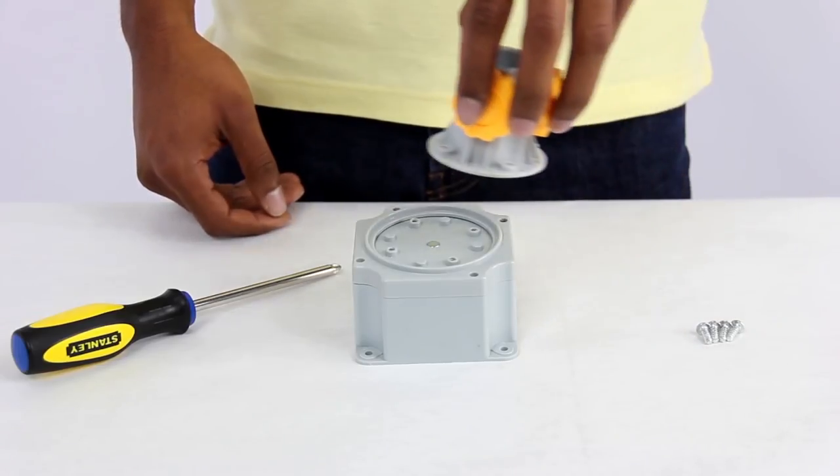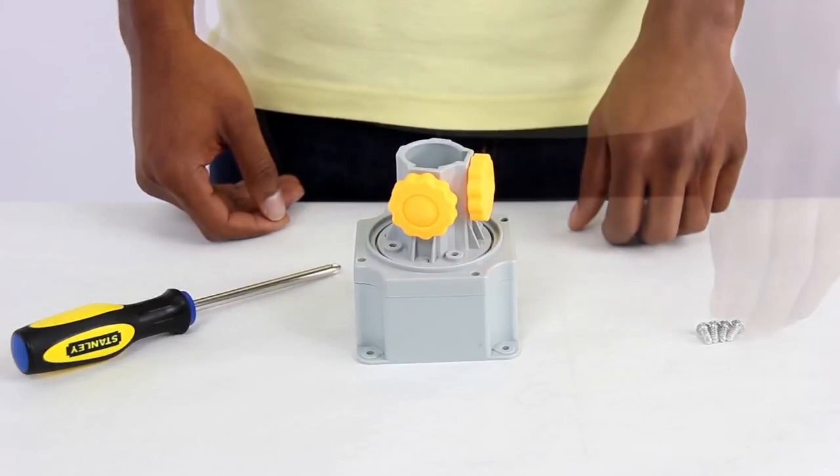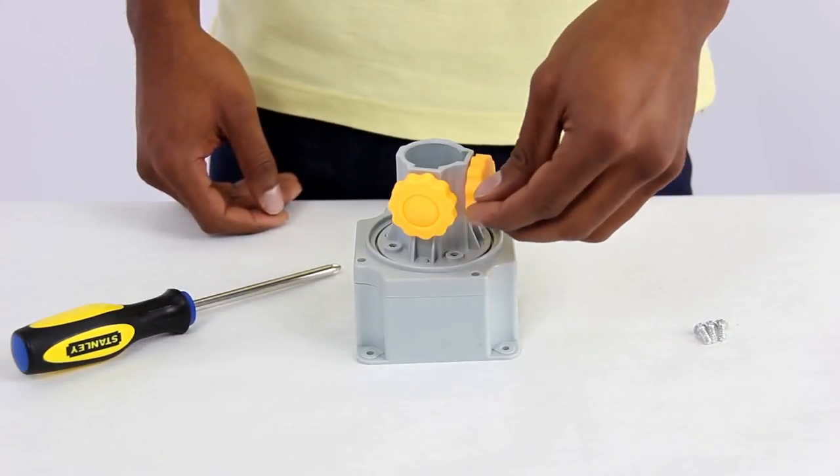Attach the main pole column to the motor rotor and use a Phillips screwdriver and silver screws to fasten.